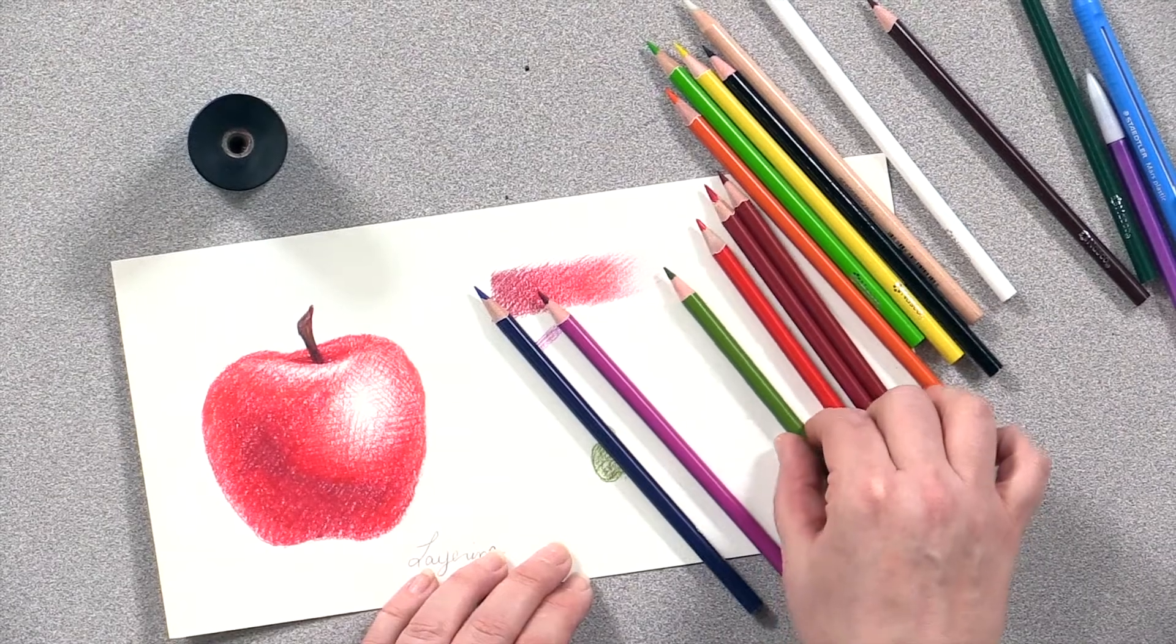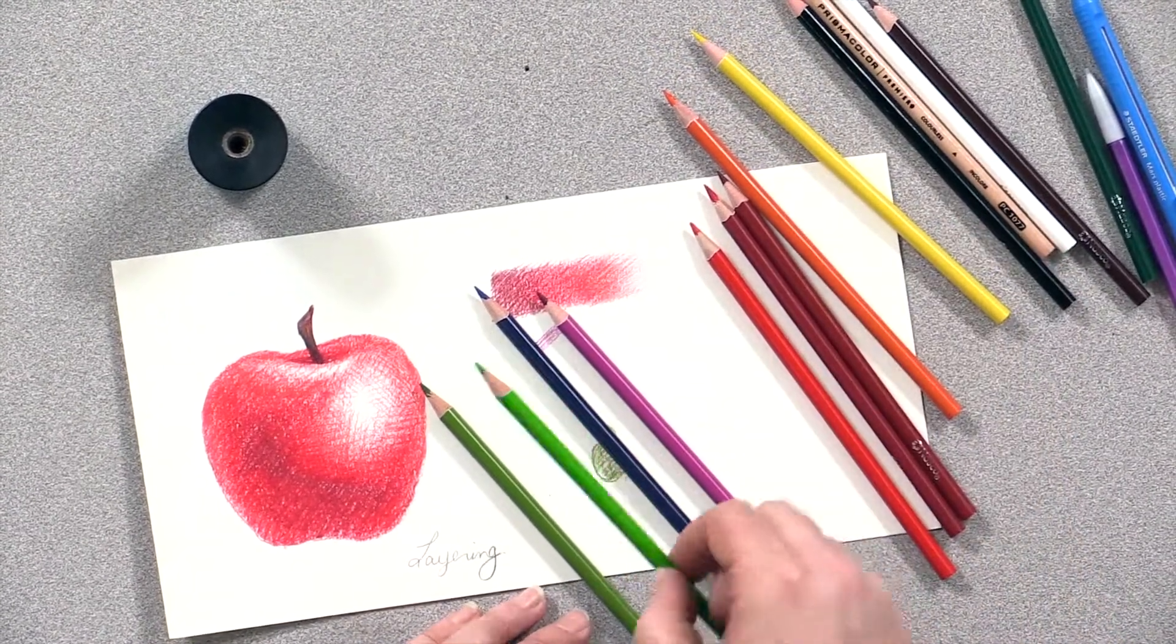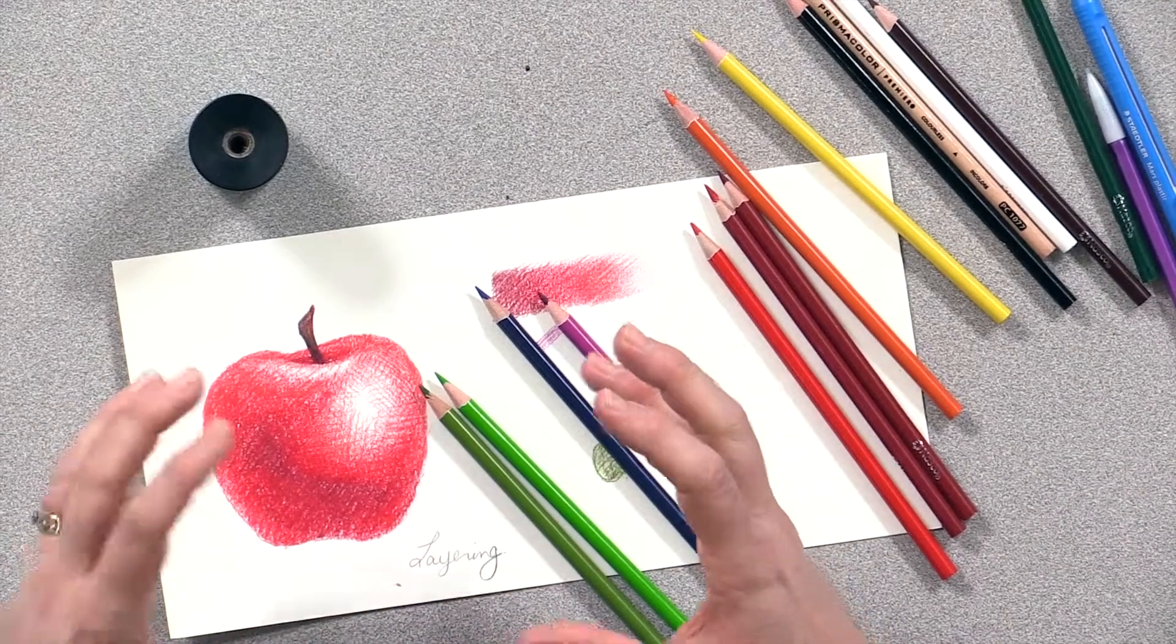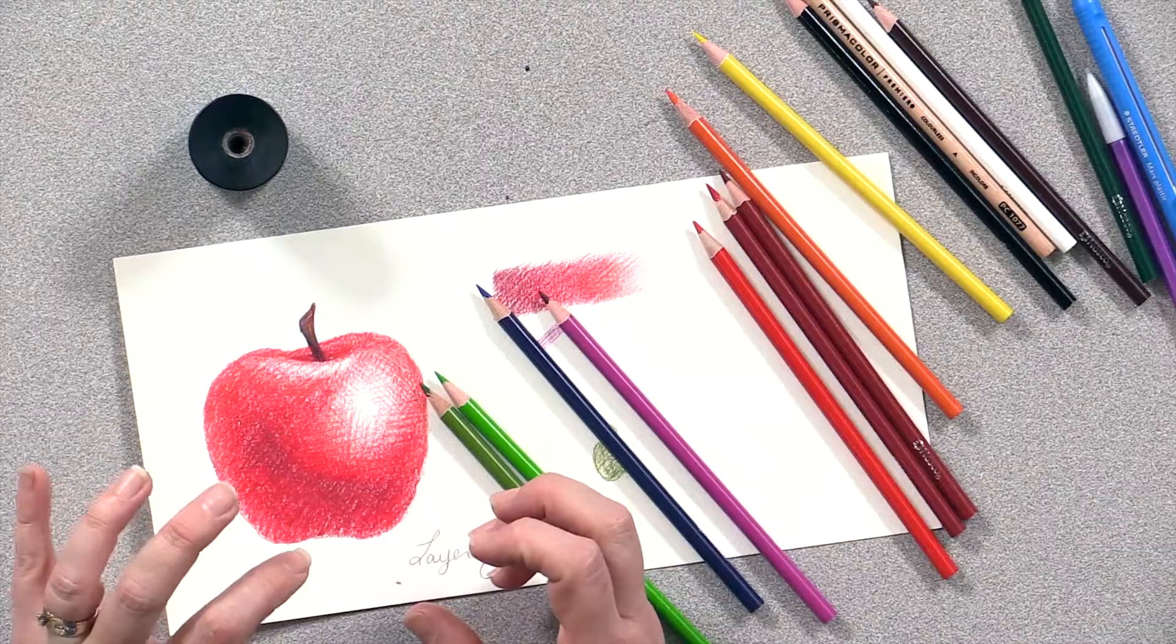And then you're going to use complementary colors to tone your drawing. So toning is taking the pure hue, the pure color, and kind of turning it down a notch. So I'm going to use greens, because greens are red's complement, to tone down the color. And I'm just going to start to layer these colors in on top of my reds, which will create a more full, finished version of this apple.